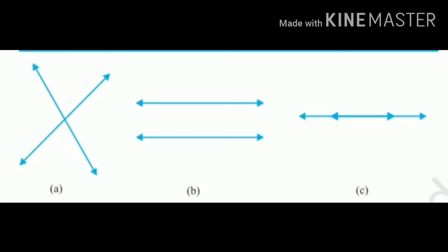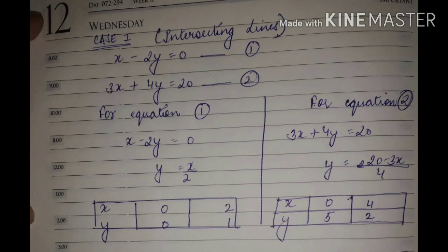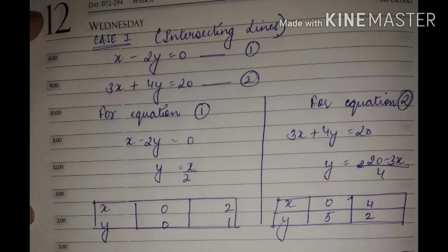Let us see these cases one by one. In Case 1, I have taken two equations: x minus 2y is equal to zero, and 3x plus 4y is equal to twenty. I have solved both equations in graphical form. x minus 2y = 0 can also be written as y = x/2. Minus 2y equals minus x, the minus signs cancel, so y becomes x/2.